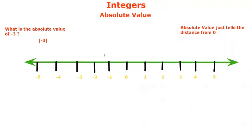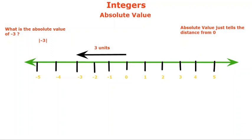On a number line, to find the absolute value of minus three, we check its distance from zero — that's one, two, and three — so the distance from zero is three units. We must always remember that distance from zero can never be negative; it will always be positive. So we say it is positive three units away from zero.